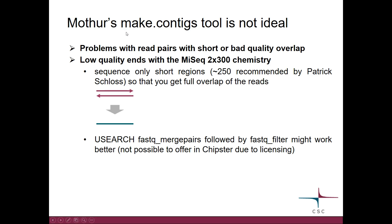It's worth pointing out that the mothur make contigs tool is not ideal — it doesn't cope very well with situations where the overlap of the two reads is very short, or if the overlap is of very bad quality.